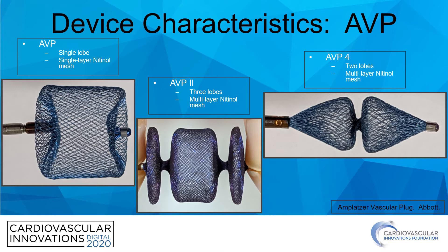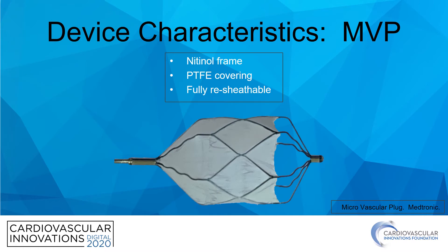The major difference between the original AVP and the AVP-2 and AVP-4 is the nitinol mesh. The original AVP has a frame made up of a single layer of nitinol wire, as opposed to the other two which are made up of multi-layer braided nitinol wire, which could theoretically lead to quicker and more complete vessel thrombosis. The second plug platform is the microvascular plug, which also has a nitinol frame but whose mechanism of thrombosis is driven by the PTFE covering applied to the proximal portion of the device.